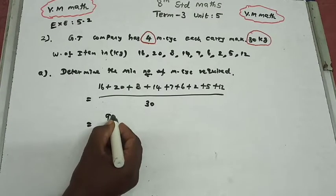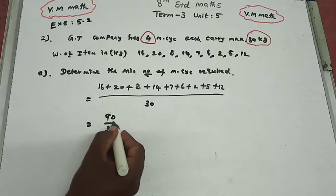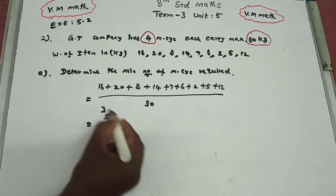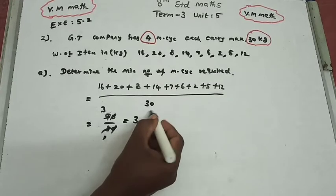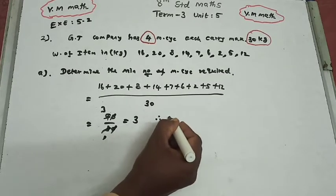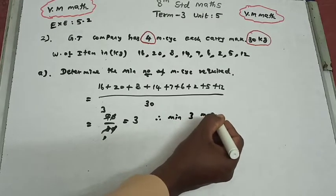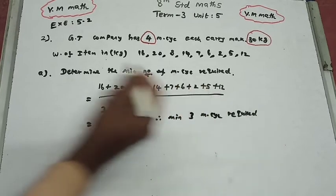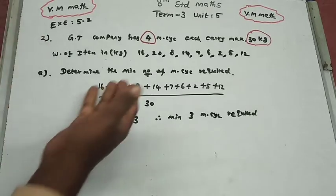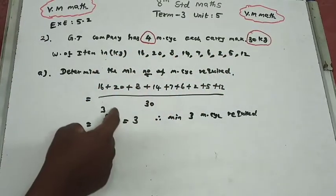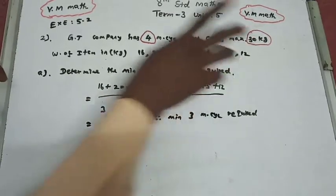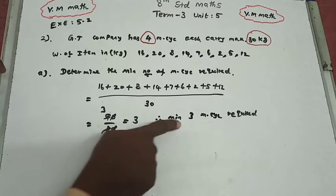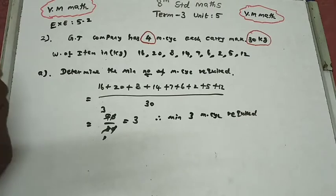The total is: 16 + 20 + 8 + 14 + 7 + 6 + 2 + 5 + 12 = 90 kg. Divided by the maximum carrying load of 30 kg: 90 divided by 30 equals 3. Therefore, the minimum number of motorcycles required for the first question is 3.